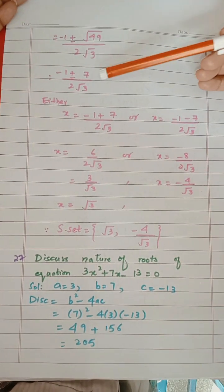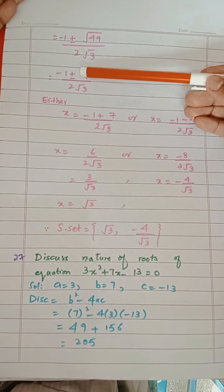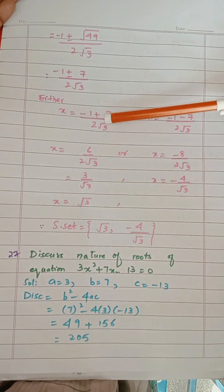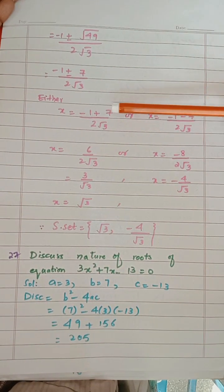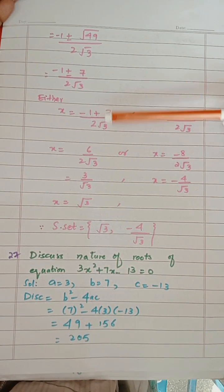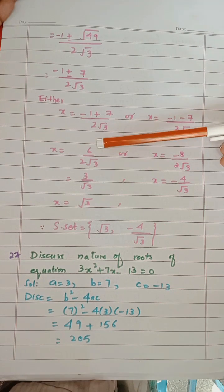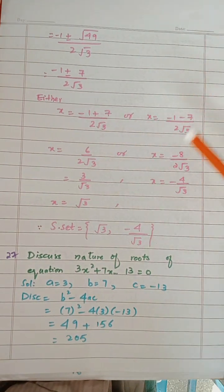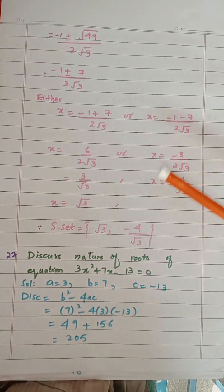Now, because there are two signs — positive and negative — either x is equal to the positive value or the negative value. This will be 7 minus 1, that is 6. 2 times 1 is 2, 2 times 3 is 6. And here, minus 8: 2 times 1 is 2, 2 times 4 is 8. Minus as it is.